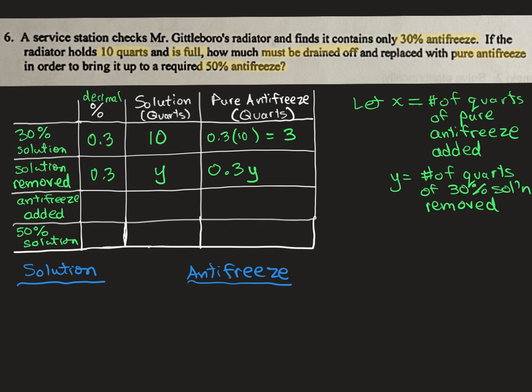Next thing after that was removed, then we added antifreeze. So that's my next row. And the antifreeze that we added was 100%, or I'm just going to put a one there. And the amount we added was x. But it was pure antifreeze, so that means the volume of pure antifreeze would also be x.